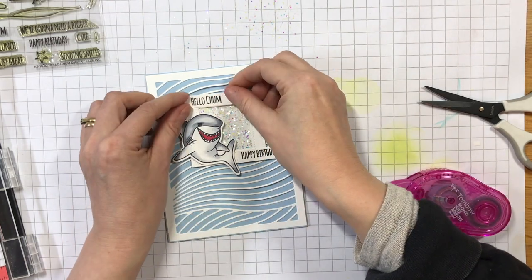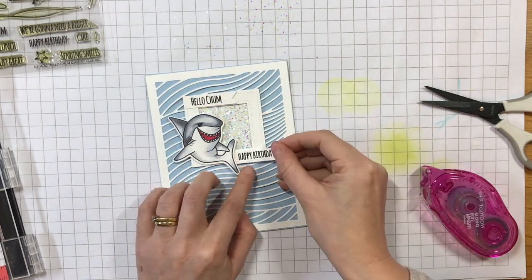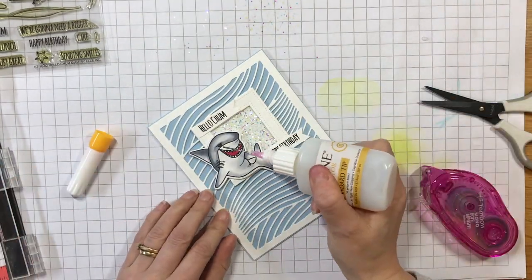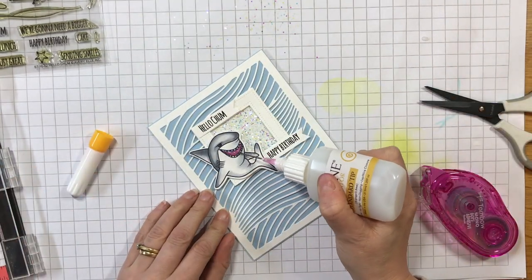Once everything was in place, the last touch was to add a bit more detail to the shark with diamond glaze or glossy accents. I added some to his mouth and gave him a little twinkle in his eye too.